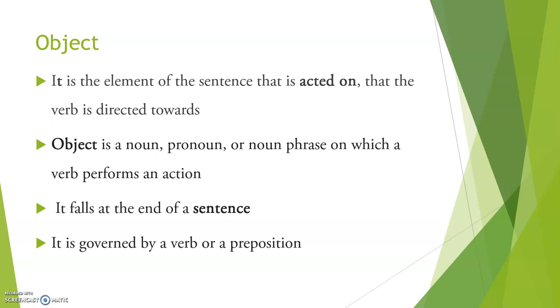Object is the element of the sentence that is acted on, that the verb is directed towards. Object is a noun, pronoun or noun phrase on which a verb performs an action. Object is usually found towards the end of a sentence. It is governed by a verb or a proposition.